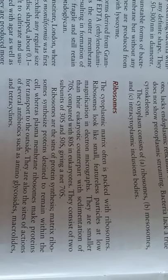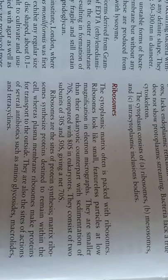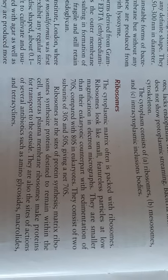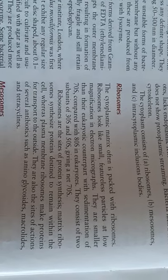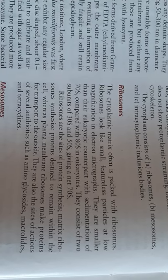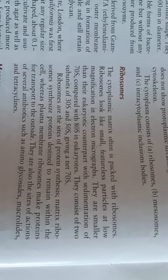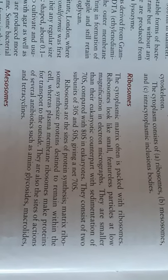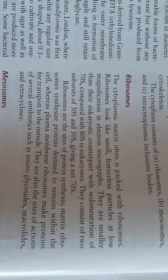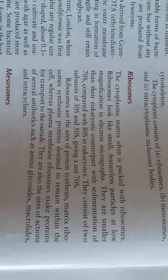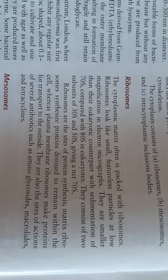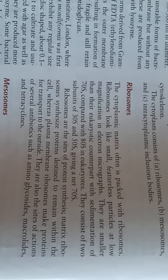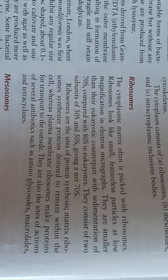Ribosomes are packed throughout the cytoplasmic matrix. They appear as small, featureless particles at low magnification in electron micrographs. They are smaller than their eukaryotic counterparts with a sedimentation coefficient of 70S compared with 80S. 70S ribosomes are present in prokaryotes; 80S ribosomes are present in eukaryotes. 70S consists of 30S and 50S subunits. Ribosomes are the sites of protein synthesis.